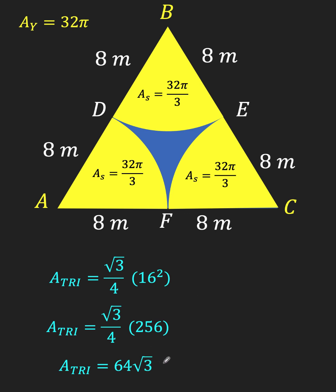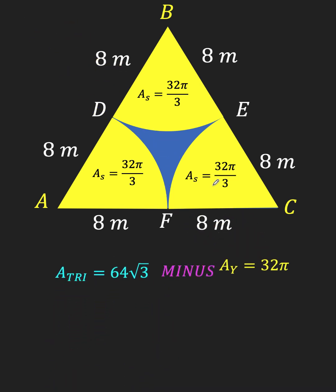So, if we subtract from this area the combined area of the three yellow sectors, we will get the area that is shaded blue, which is our objective in this problem.